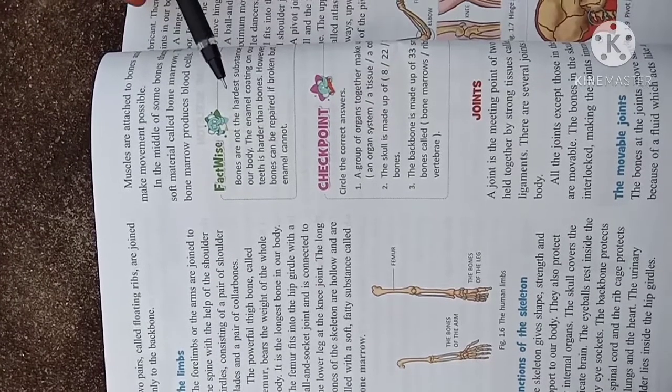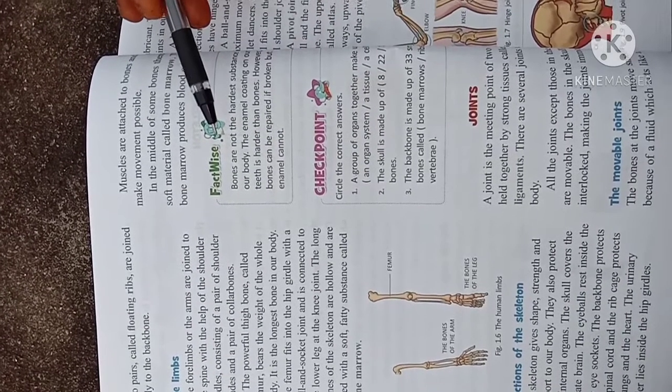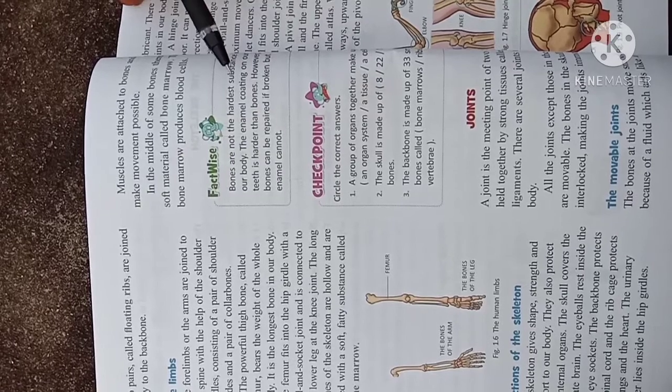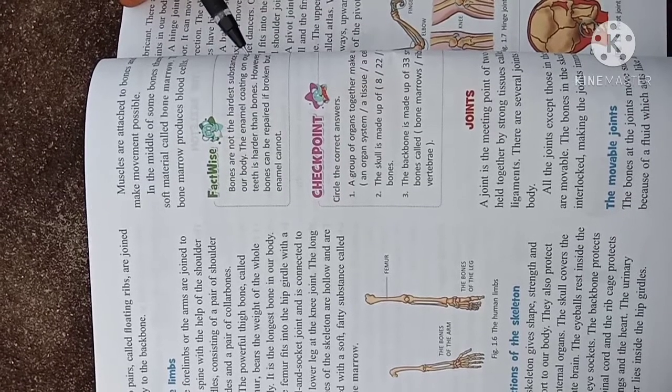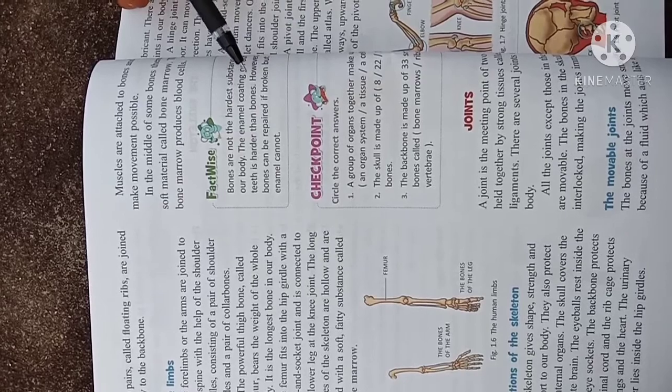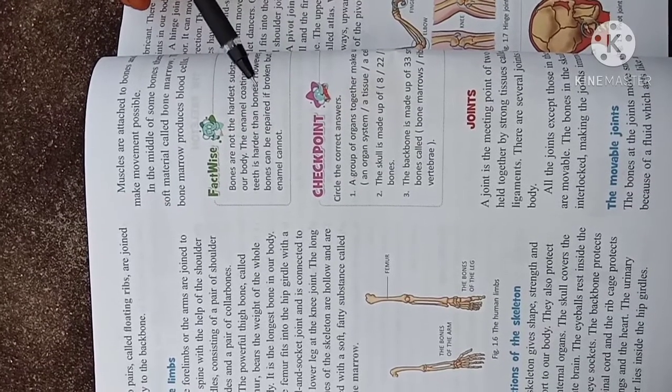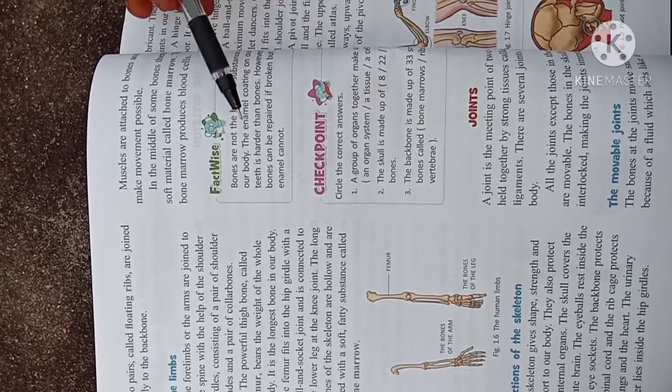Here we can know the fact: bones are not the hardest substance in our body. The enamel coating of our teeth is harder than the bones. However, the bones can be repaired if broken, but enamel cannot.